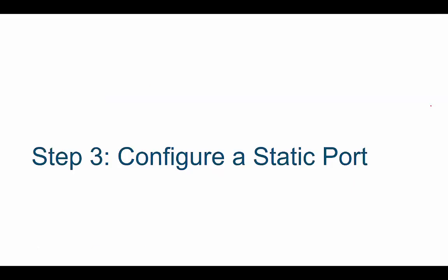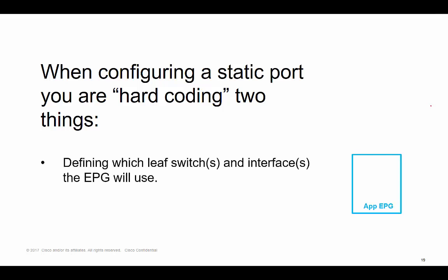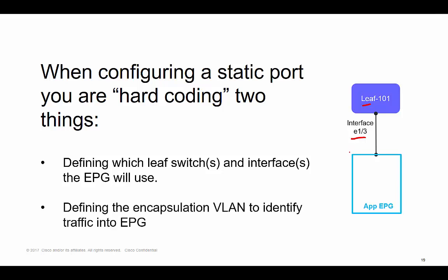That takes us to step three: configure something called a static port. When configuring a static port, you're defining or hard-coding two things — which leaf switch and interface will be used, and the VLAN ID to identify traffic within that EPG. In this example, it's leaf 101 interface 1/3, and we're going to use VLAN 10. Traffic coming in on VLAN 10 on that interface will be placed within the application EPG.